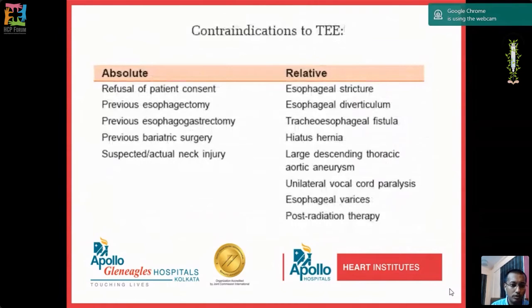Absolute contraindications to TEE include: patient refusal/lack of consent; previous esophagectomy or esophagogastrectomy; history of bariatric or gastric surgery; suspected or actual esophageal or neck injuries (as neck manipulation and jaw movements are needed for insertion). Relative contraindications include: esophageal stricture, esophageal diverticulum, tracheoesophageal fistula in pediatric patients, large hiatus hernia, large descending thoracic aortic aneurysm, unilateral vocal cord paralysis, active esophageal varices, and post-radiation therapy.